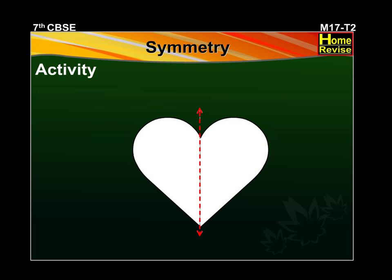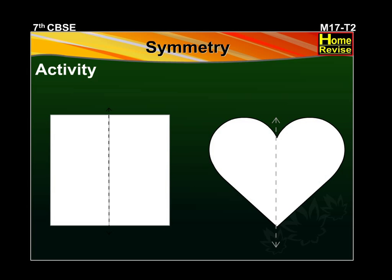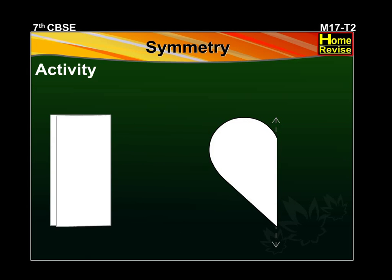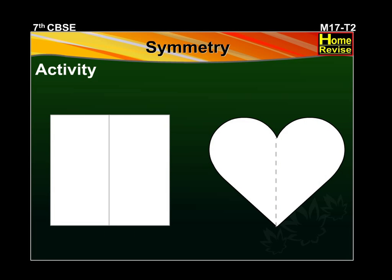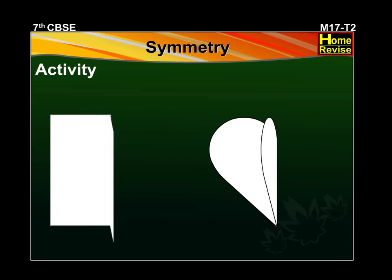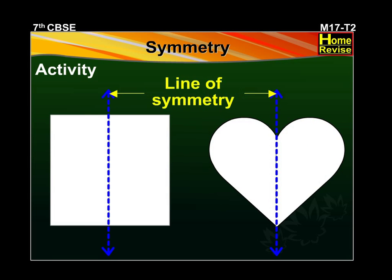The line along the fold is the line of symmetry. A shape has symmetry if you can fold it so that one side fits exactly onto the other. The fold line is the line of symmetry. A line of symmetry is also called a mirror line.